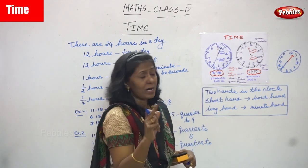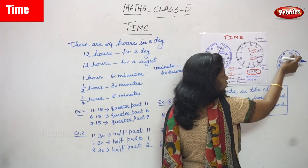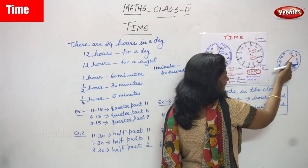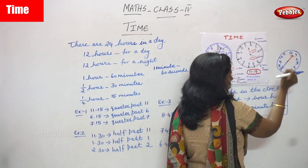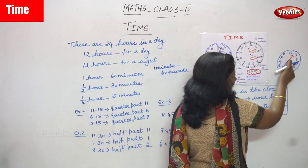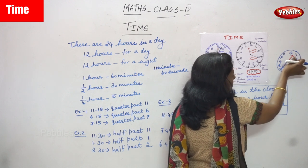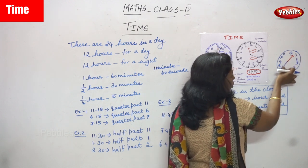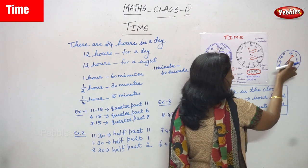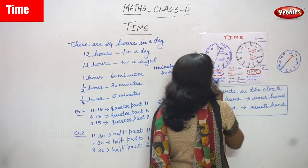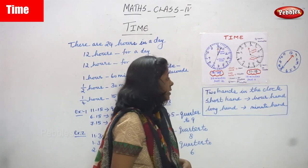6 represents 30, 7 represents 35, 8 represents 40, 9 represents 45, 10 represents 50, 11 represents 55, 12 represents 60 minutes altogether — that means 60 minutes is one hour. So the red hour hand is between 12 to 1 and the blue long hand points to 7, so the time is 12:35, which we can also call 35 minutes past 12.